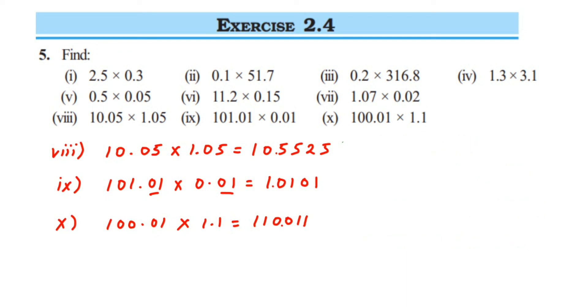We've done all the multiplications. The method is simple: just multiply the numbers, then count the total number of decimal digits from both numbers, and place the decimal point that many positions from the right in the answer. If you have further questions, drop a comment and I'll try to answer. Thank you so much for watching.